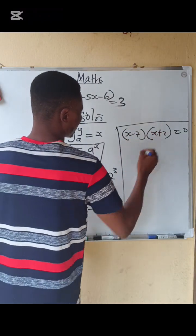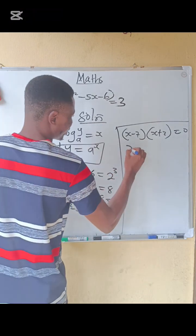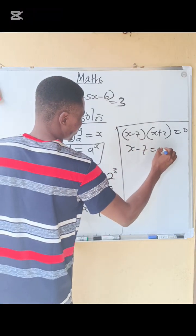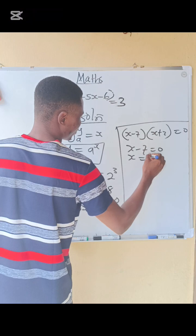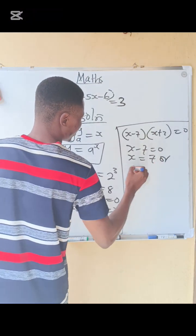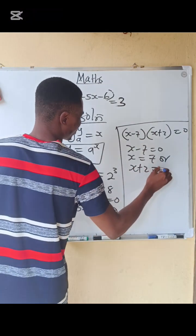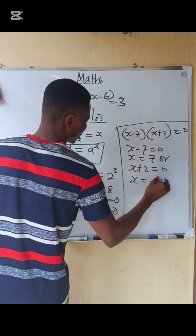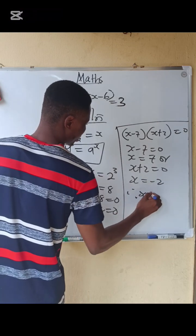So x minus 7 equals 0, x equals 7, or x plus 2 equals 0, so x equals minus 2. Therefore, x equals minus 2 or 7.